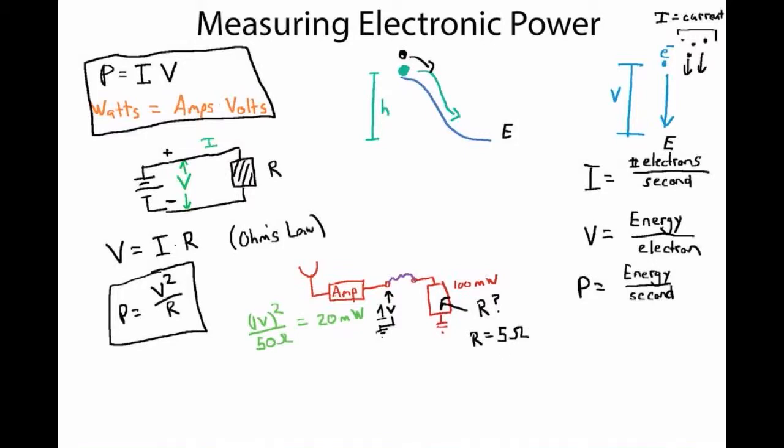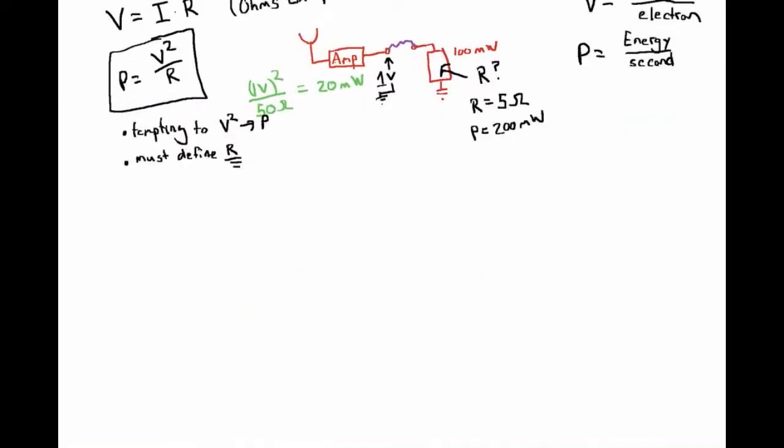But if that item was maybe 5 ohms instead of 50 ohms, then because of the presence of the R in the equation for power here according to Ohm's Law, we're going to get 10 times the power out of this thing, 200 milliwatts. And boom, we just burnt out our sensitive piece of electronics here. So the warning about this equation that uses Ohm's Law for measuring power is it's tempting to translate voltage squared into power, but it's absolutely necessary to know what your resistance is when you do that. So enough warnings about knowing your resistance.